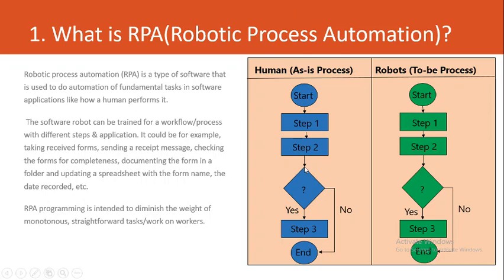On the screen, the left-hand side in blue shows the steps a human is performing — this is the as-is process. On the right-hand side in green, you can see the robot performing the same steps. The as-is process is what is currently being performed in your industry, but when those same steps are performed by a robot, that is called robotic process automation.